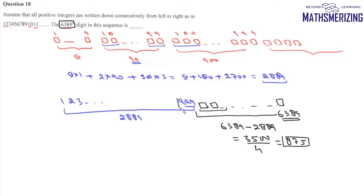So from 999, we have added 875 more numbers starting from 1000, then 1001. We'll look at the 875th number, which will be 1874. So the last number in the sequence will be 1874 and the last digit in the sequence will simply be 4. So the 6389th digit in the sequence is simply 4, and that is the answer to this question.